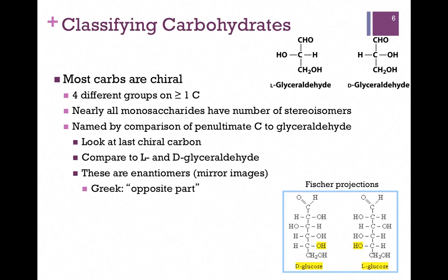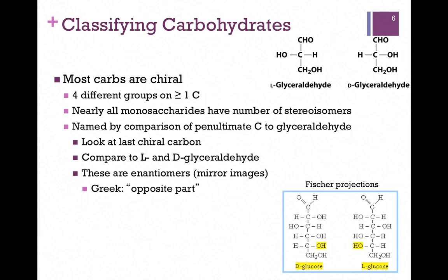Almost all monosaccharides have a number of chiral centers, giving them many possible stereoisomers. We compare them by the penultimate — or next to last — carbon: look for the last chiral carbon and compare it to L and D glyceraldehyde. Here we have the example of D and L glucose. In D-glucose, the OH group on that penultimate carbon, highlighted in yellow, is on the right. In L-glucose, it's on the left. These are non-superimposable mirror images — enantiomers, meaning "opposite parts" — and are pictured here as Fischer projections.